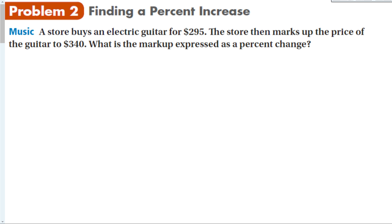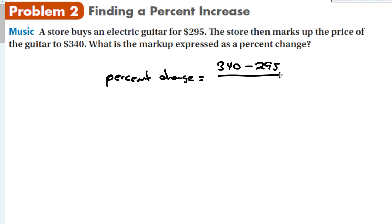A common example of percent increase is seeing how much something has been marked up. A store buys an electric guitar for $295, then marks up the price to $340. What is the markup expressed as a percent change? The bigger value minus the smaller, divided by the original amount. So percent change equals $340 minus $295, which is $45, divided by $295, giving about 0.15, or 15 percent.